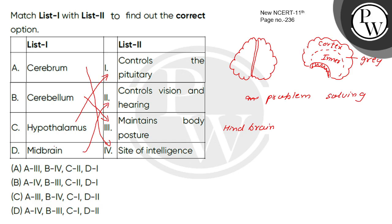The correct option is confirmed. The midbrain receives visual, tactile, and auditory inputs — that is why vision and hearing is the correct match for midbrain.